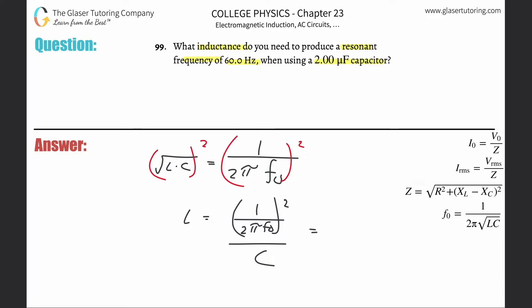Now we can just start plugging in some numbers. So this is going to be 1 divided by 2π multiplied by the resonant frequency they told us was 60, and then this whole thing is squared, divided then by the capacitance. So that's 2 microfarads, but we need that in farads, so multiply by 10 to the minus 6.